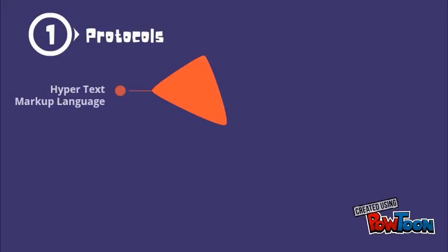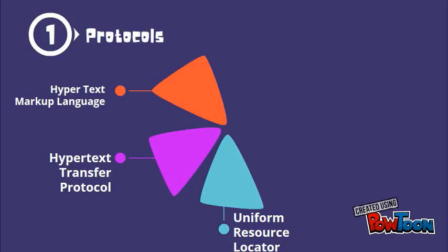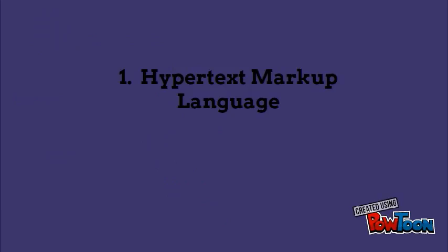Technically, the World Wide Web hinges on three enabling protocols. The first is Hypertext Markup Language. The second is Hypertext Transfer Protocol, and the third is Uniform Resource Locator. The hypertext pages on the web are all written using the Hypertext Markup Language, HTML, a simple language consisting of a small number of tags to delineate logical constructs within the text.